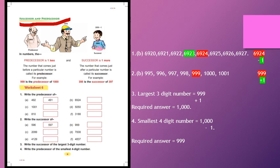Similarly, predecessor: now you are in Standard 3, so what was your previous class? It was Standard 2. How do we find two? From three, we subtracted one — three minus one equals two. So in general, to find the successor, do plus one; and to find the predecessor, do minus one. Our Worksheet 6 is based on this — finding successor and predecessor.